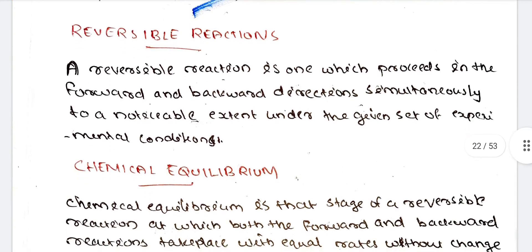Let's look at the Reversible Reactions. What is Reversible Reactions? We are discussing the Reversible sign. This is Double Arrows. A Reversible Reaction is one which proceeds in the forward and backward direction simultaneously to a noticeable extent under the given set of experimental conditions.